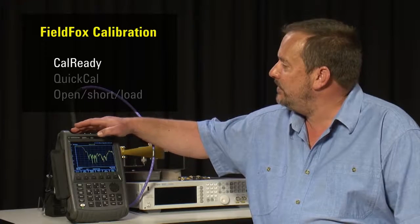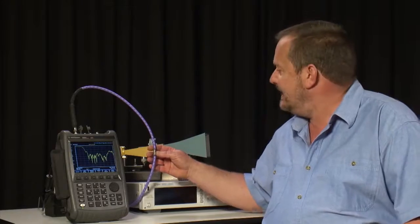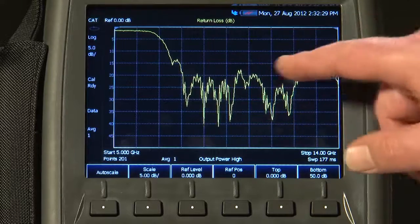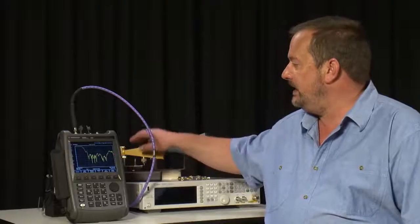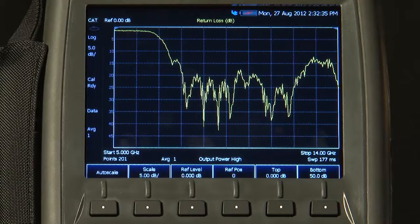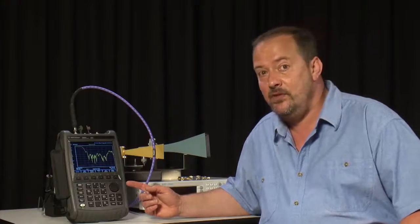So provided we are happy that we are going to be measuring here the response of both this cable, which is a very good quality low loss cable and quite short, and this antenna, so the display of return loss is showing as the return loss of both the antenna and the cable, then we do not need to do any calibration at all. And this may be perfectly acceptable for factory acceptance testing before you go out on site.